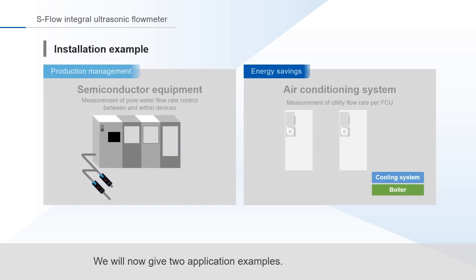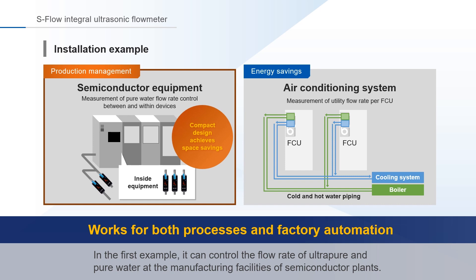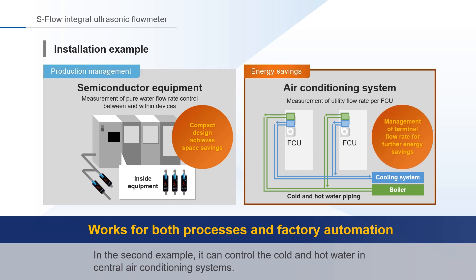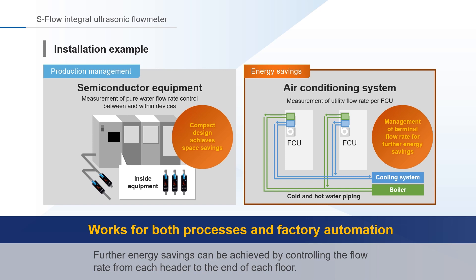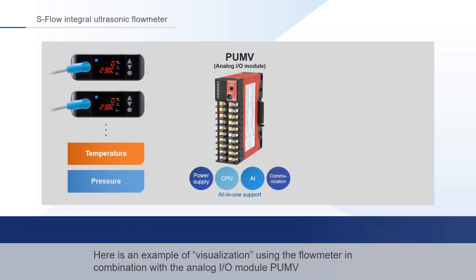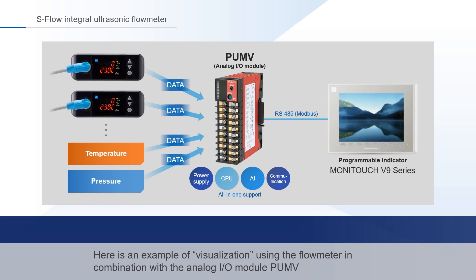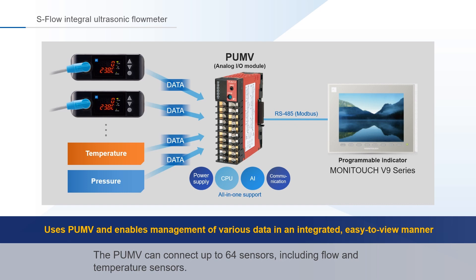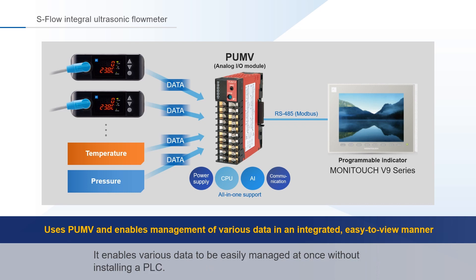We will now give two application examples. In the first example, it can control the flow rate of ultra-pure and pure water at the manufacturing facilities of semiconductor plants. Its compact structure enables installation at sites with dense piping and within equipment. In the second example, it can control the cold and hot water in central air conditioning systems. Further energy savings can be achieved by controlling the flow rate from each header to the end of each floor. Here is an example of visualization using the flow meter in combination with the analog I/O module PUMV and programmable indicator. The PUMV can connect up to 64 sensors, including flow and temperature sensors, and can be displayed on the programmable indicator using the built-in RS-485 communication module, enabling various data to be easily managed at once without installing a PLC.